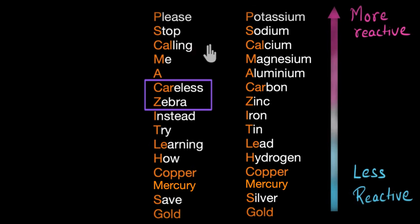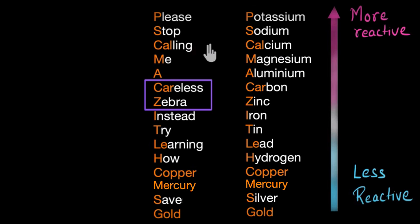Now, one last thing is that this reactivity series might look slightly different than what you already have in your textbooks. Here you might find couple of extra metals and carbon, which is a non-metal. And the reason is that carbon is something that we will deal with quite often. And that's why having it in the same list is very helpful for future. Okay, that's it for this video.